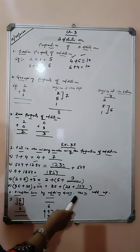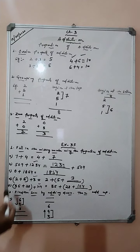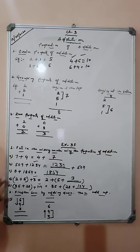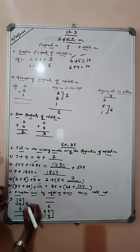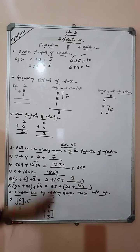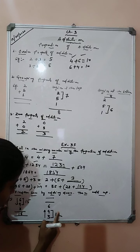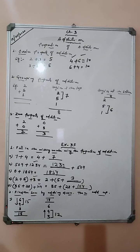Next question: find the sum by adding down then adding up. We first add from the top and then from the bottom. We have 6, 9, and 3. Adding from the top: 6 plus 9 is 15, then 15 plus 3 is 18. In the second case starting from the bottom: 9 plus 3 is 12, then 12 plus 6 is 18. In both cases the answer is the same.